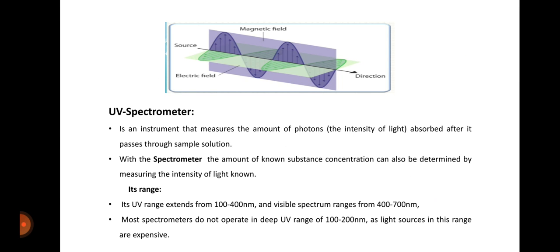Its UV range extends from 100 to 400 nm and visible spectrum ranges from 400 to 700 nm. Most spectrometers do not operate in deep UV range of 100 to 200 nm, as light sources in this range are expensive.